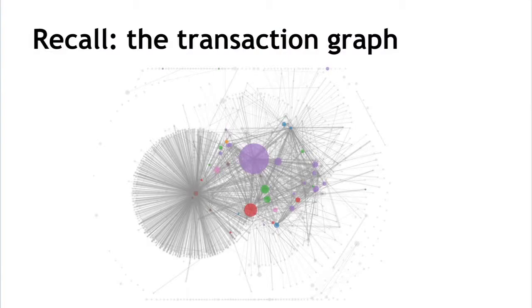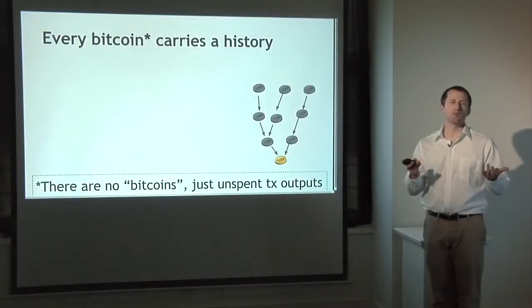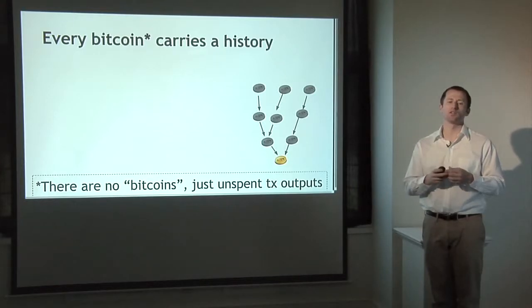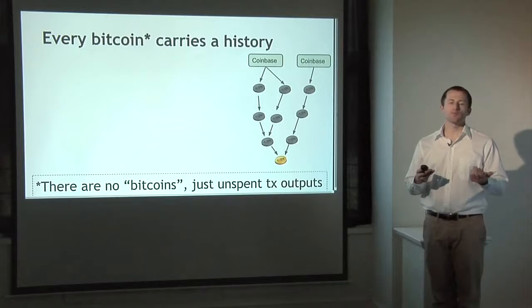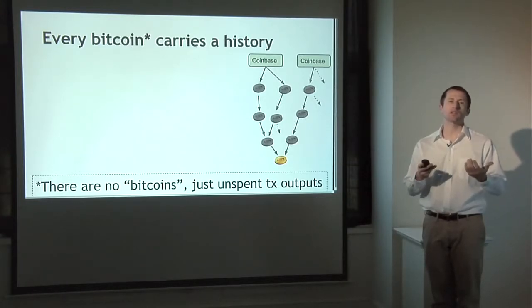Recall from the lecture on anonymity that we talked about the transaction graph of Bitcoins and the fact that you can trace ownership of value in the Bitcoin system over time. Every Bitcoin has a history. Keeping the caveat in mind that there's no such thing really as a Bitcoin — just unspent transaction outputs — every coin has this long history attached to it which anybody can view in the blockchain: a history of everybody who's owned any piece of a coin which through transfer and transactions has turned into that current unspent transaction output. For any Bitcoin, you can trace its history all the way back to some coinbase transactions when coins were originally minted.